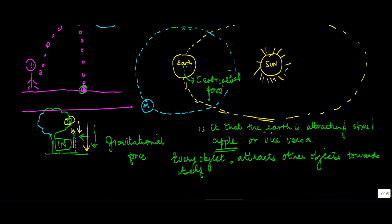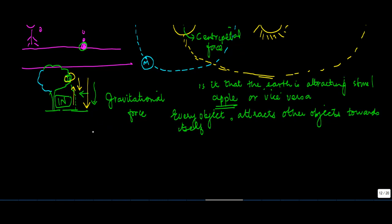But this force of attraction also known as the gravitational force depends on certain factors. The gravitational force or F is directly proportional to the mass of the objects. Let us say the mass of the apple is m and that of earth is M. So the force which is applied by these two objects is directly proportional to the mass of these two objects.